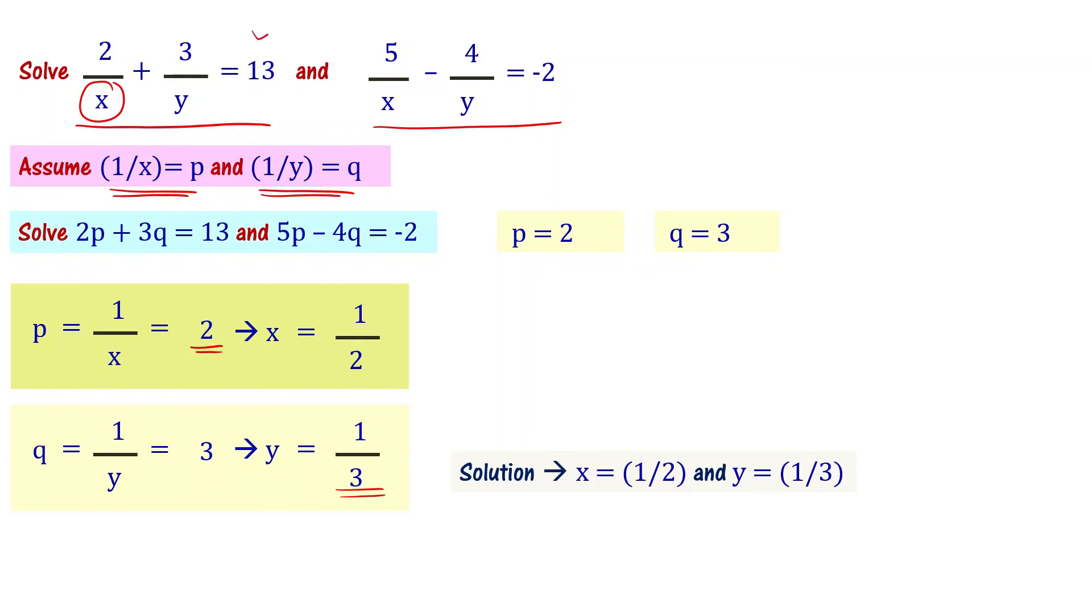Our original equations were nonlinear equations. We transformed them into linear equations in other variables, p and q, which are different variables from x and y. Once we solved for p and q, we found the xy values. Understood?